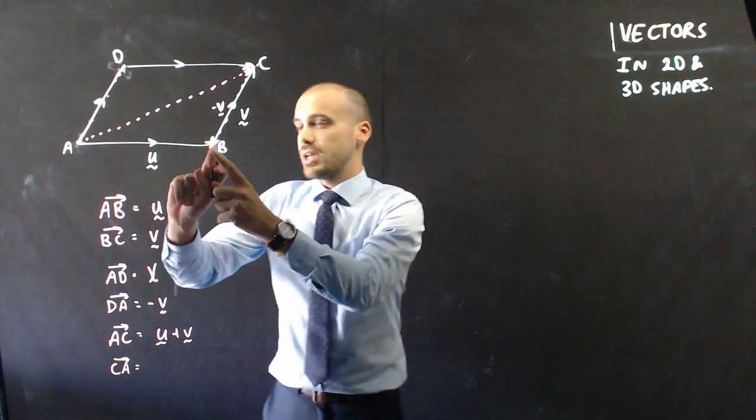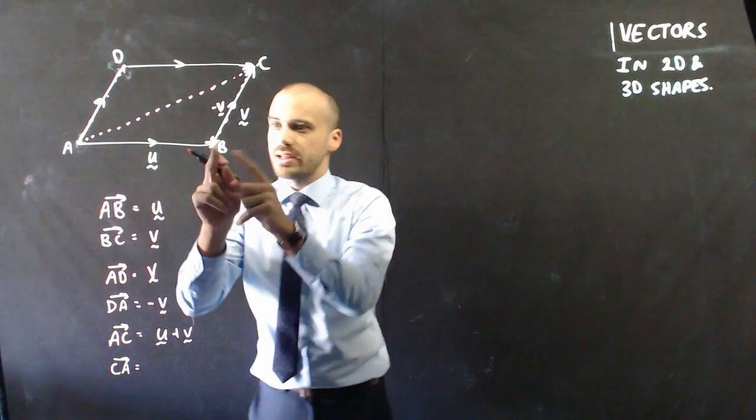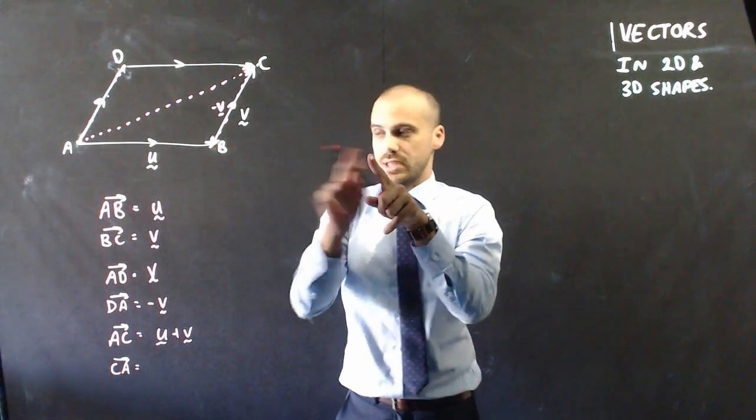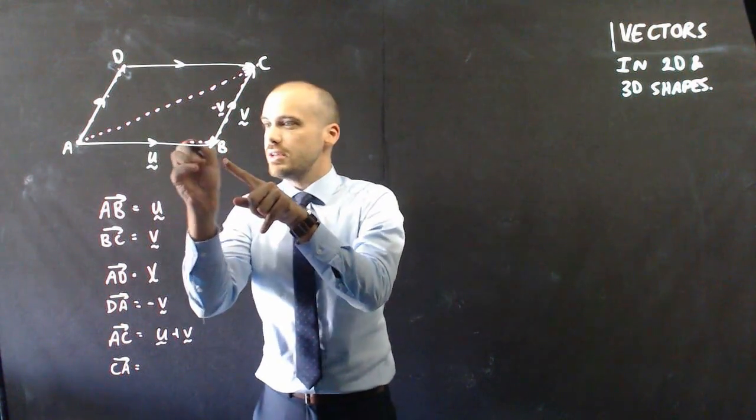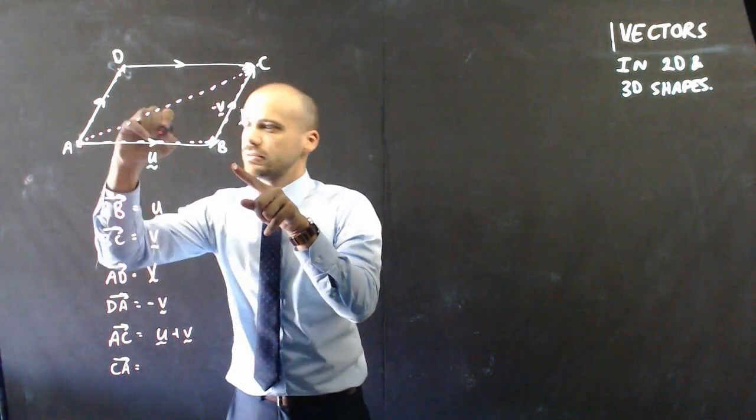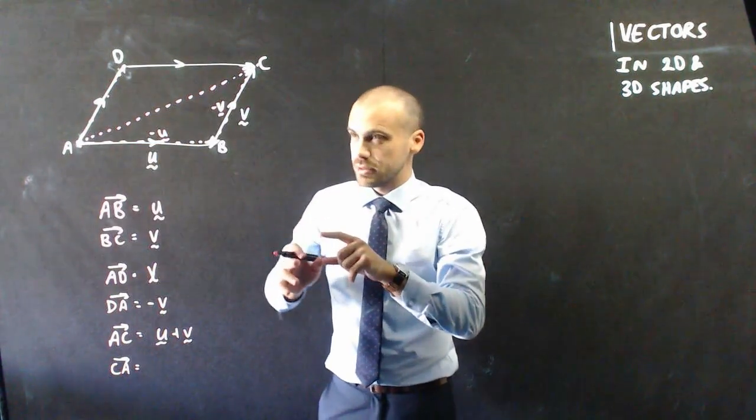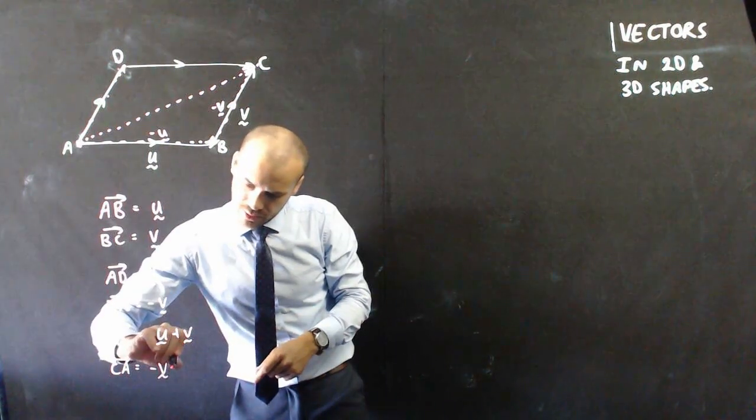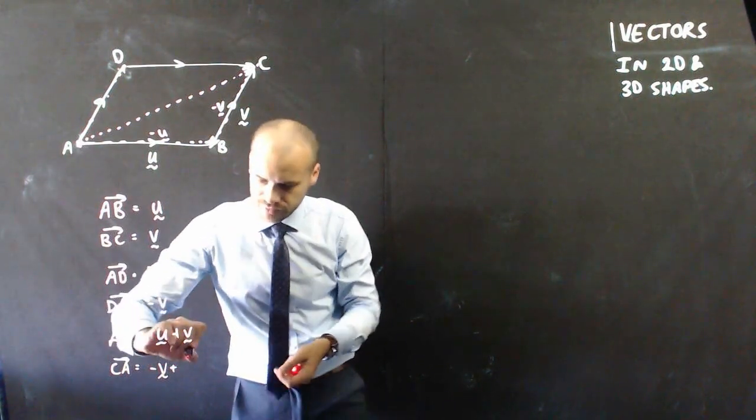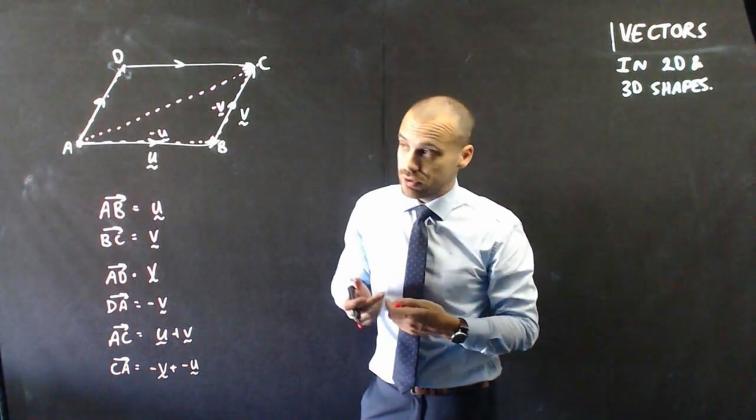And if I were to take U now and add it to that, so if I were to take U and add it to that I'd end up over here because that's U in that direction. But if I were to take negative U moving in the other direction, now I'm in business. So I can say that C to A is negative V plus negative U, or just get rid of that plus and say it's negative V negative U.